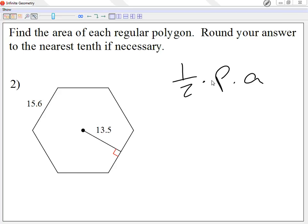Okay, so I know one half times perimeter times apothem. So one half in the calculator is 0.5. The perimeter, I'm looking at each side is 15.6. But I'm going to multiply times 6 this time, because there's six sides.